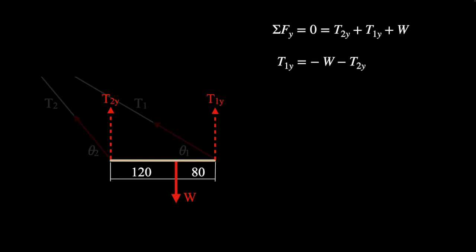Unfortunately there are two unknown variables. The other unknown variable is T2y, so we're going to need another way to analyze this so we can get a simultaneous equation going on.